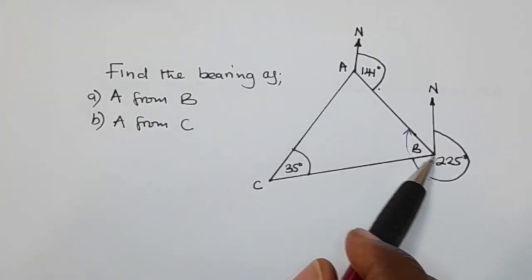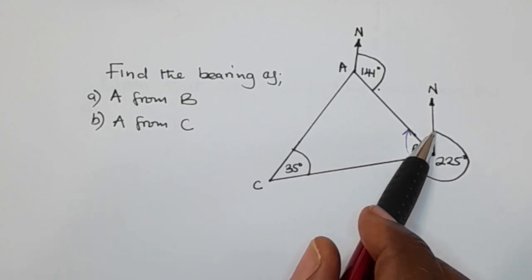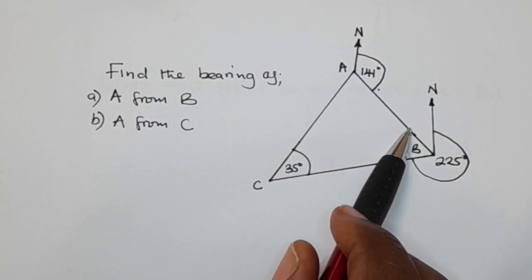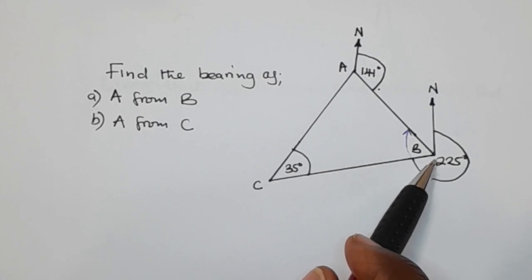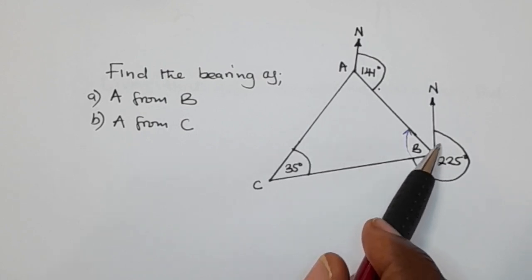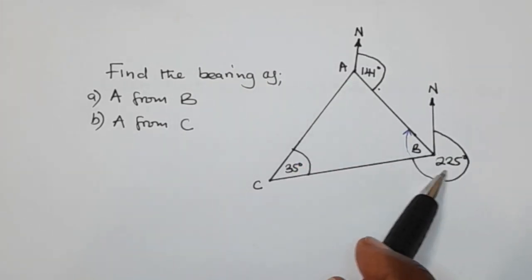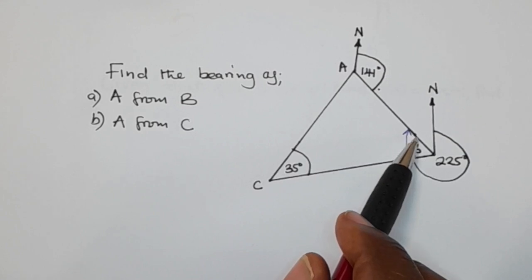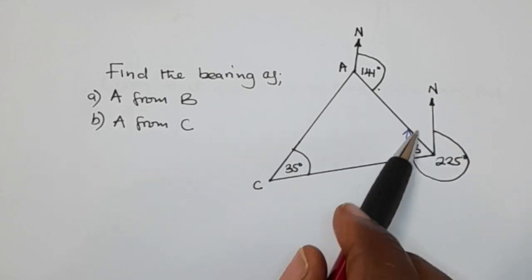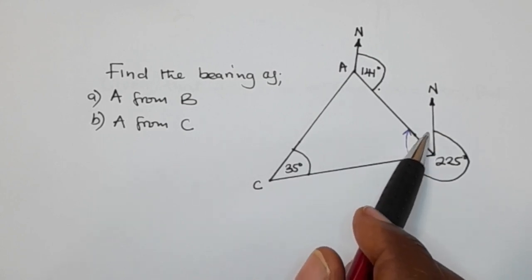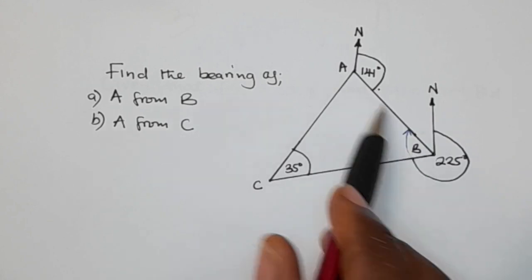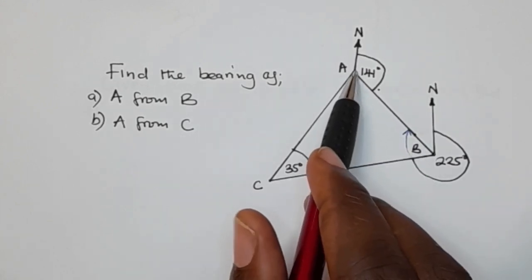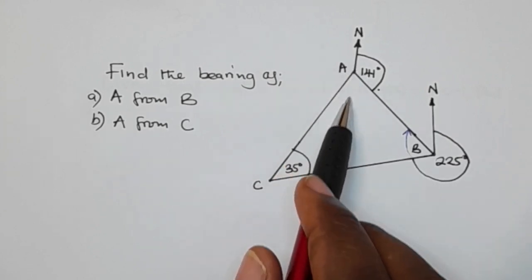Now, when you look at this, the total revolution is 360 degrees. So the bearing of A from B will be 360 minus this angle here. Now, how are we going to find this angle? We are going to find this angle by considering this north here — let's just extend this north.